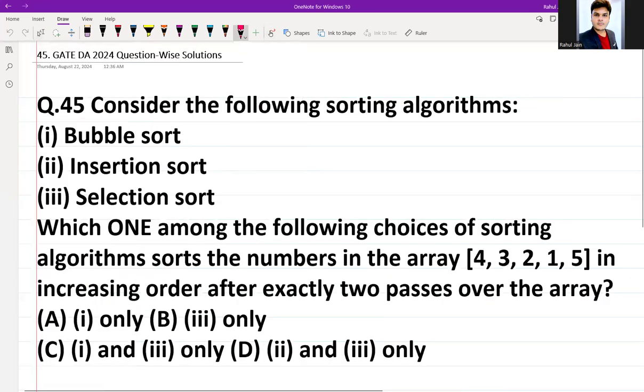Hello everyone, I hope you all are doing very well. The following question was asked in GATE DA 2024 from DSA for 2 marks. The question is as follows: Consider the following sorting algorithms - bubble sort, insertion sort, and selection sort. Which one among the following choices of sorting algorithms sorts the numbers in the array [4, 3, 2, 1, 5] in increasing order after exactly two passes over the array?